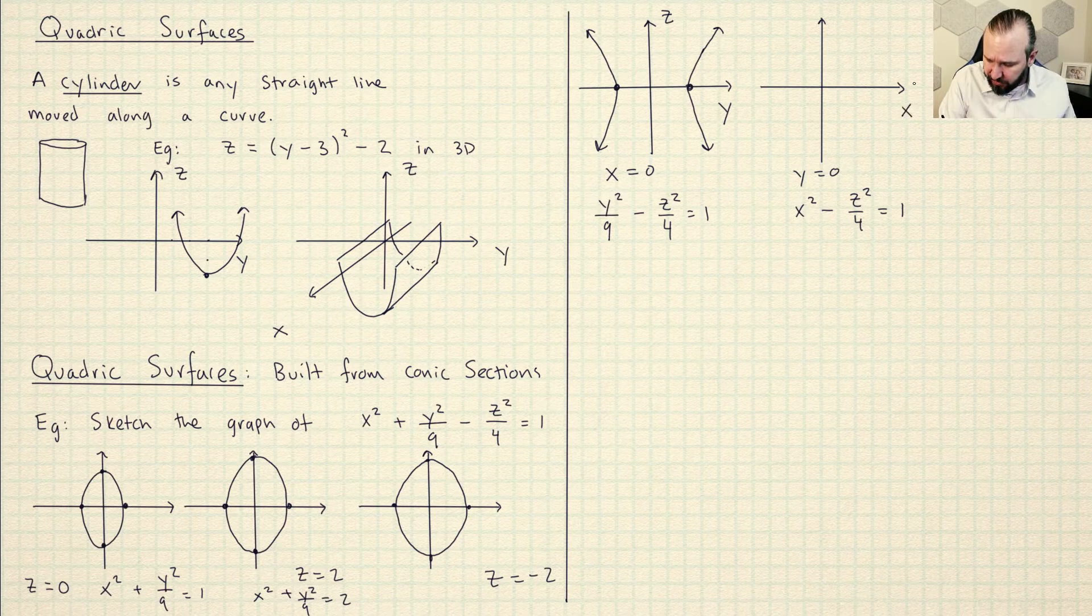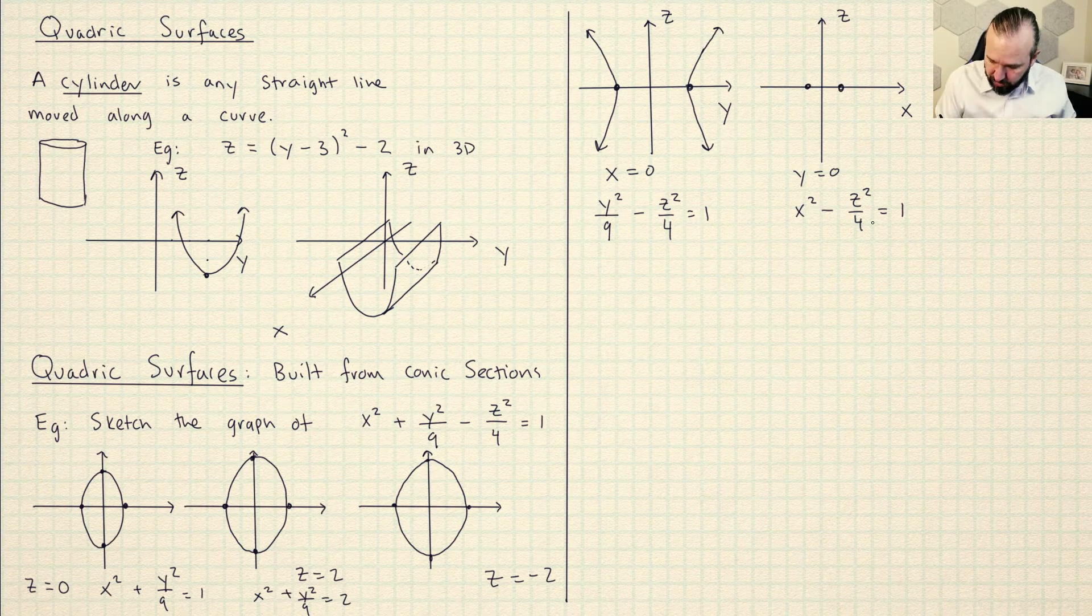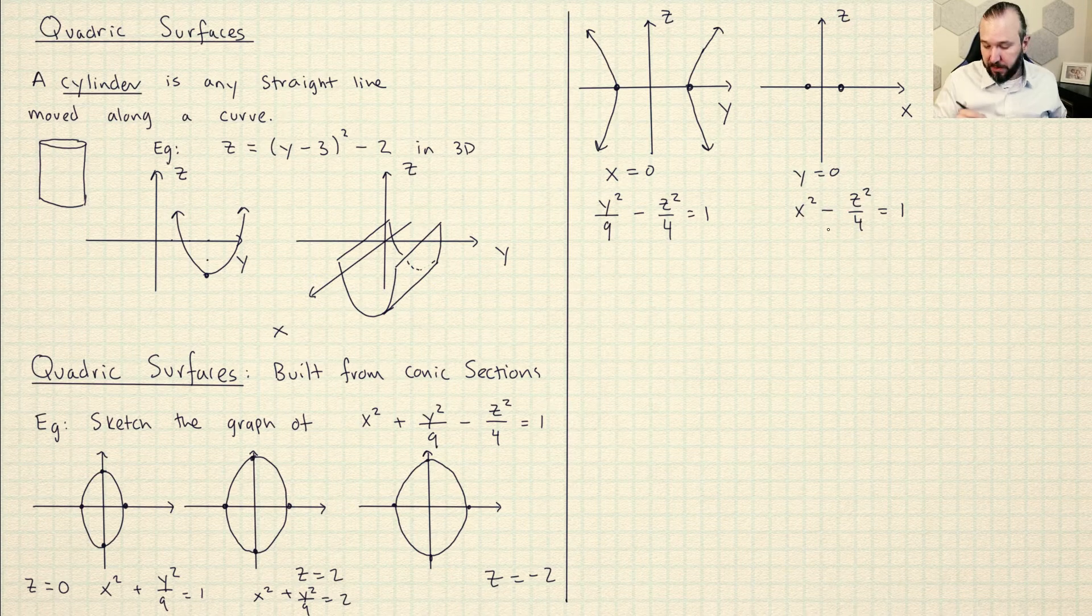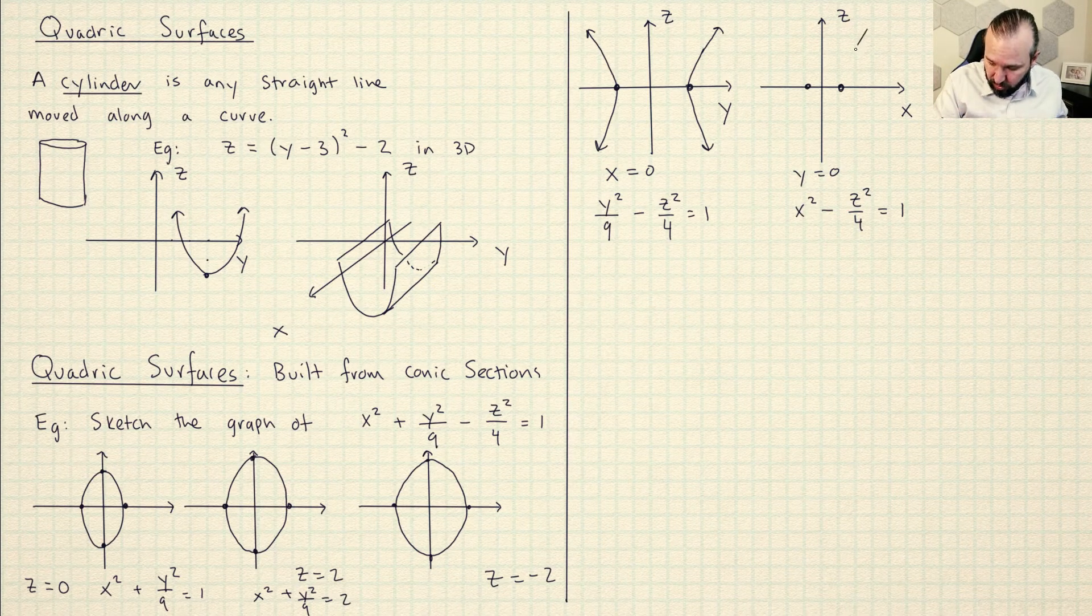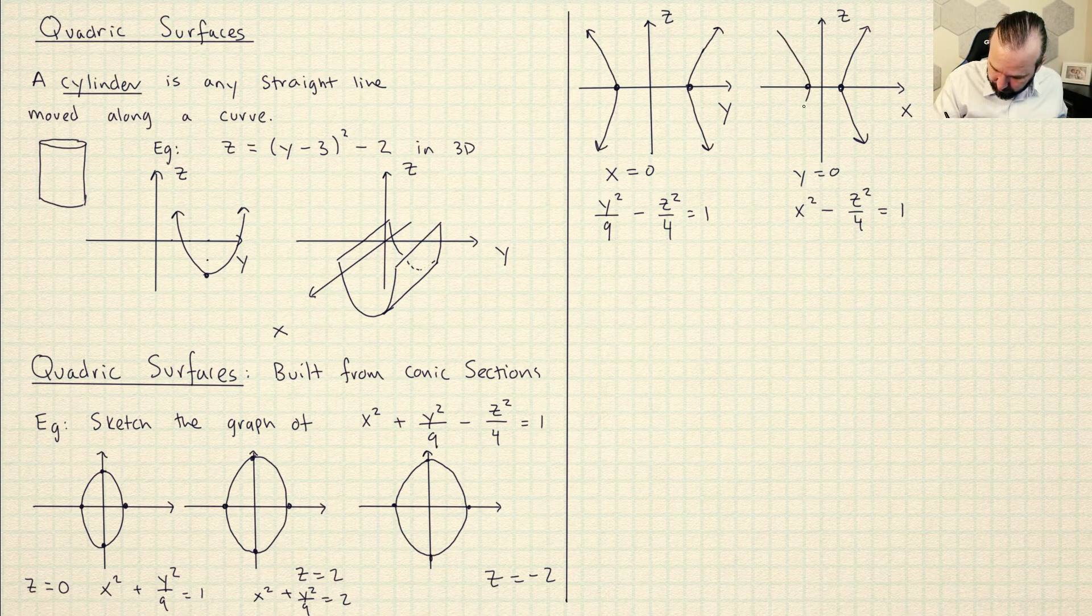So likewise here, if this is the X, Z plane, then I am going to have X intercepts. They're going to be much closer. You can see here if I plug in Z is equal to zero, then I'm going to get X is plus or minus one. And then likewise, there won't be any Z intercepts. So I get some hyperbolas that look like this.